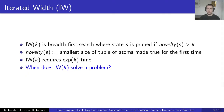The Iterated Width algorithm with parameter k is a breadth-first search where a newly generated state s is pruned if the novelty of this state is greater than k. The novelty of state s is defined as the smallest size of a tuple of atoms made true for the first time. The IW algorithm requires time that is exponential in k. Typically for k equals one and two, IW runs fast, while for other k it runs pretty slow.